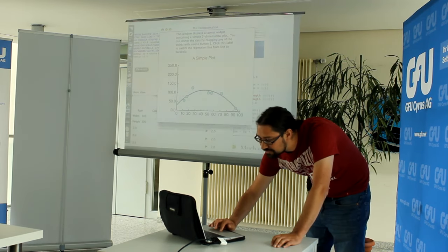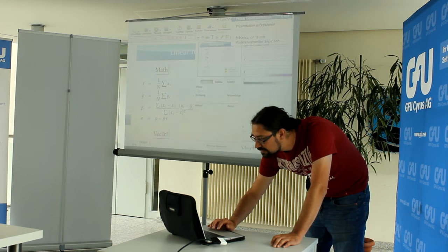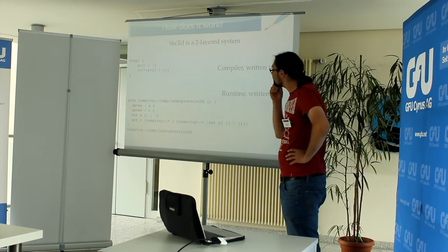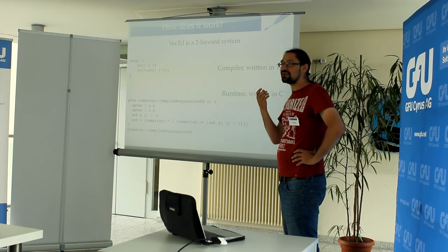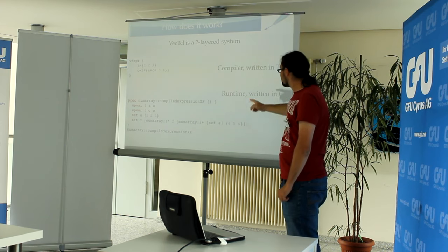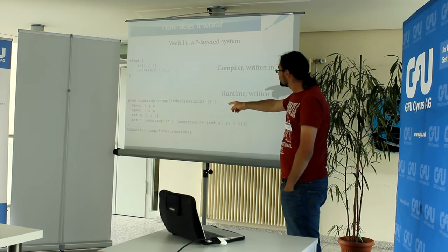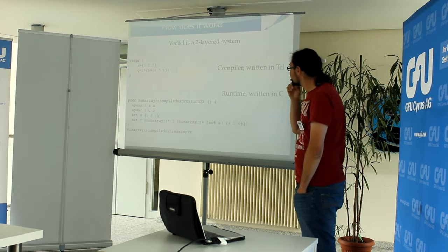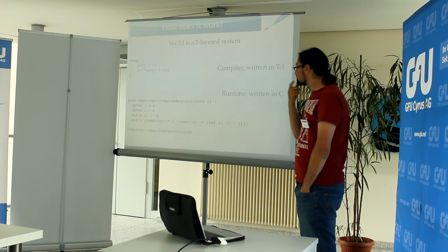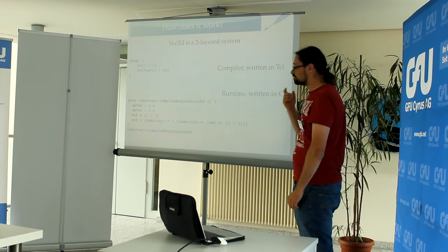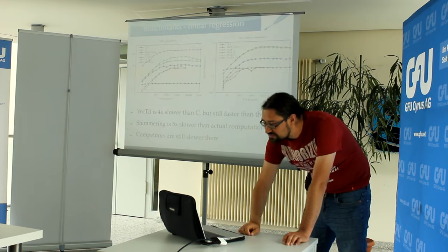So how does all of that work today? Vecticl is a two-layer system. First you have the Vexpr command, implemented in Tcl — it's a compiler. It compiles the expression you want to compute into a sequence of function calls. You can see the result of the compiler: it has a few upvar commands, then sets A, and then has a chain of calls to the underlying basic functionality. This runtime is written in C and does fast computation of vectorized arguments, and by this we can get impressive speed.